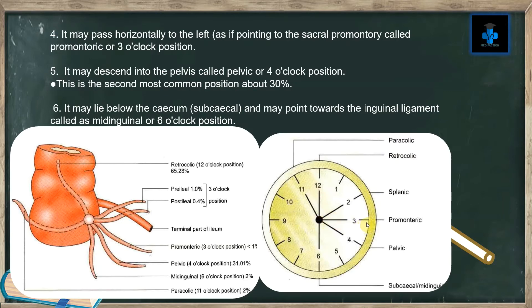It may pass horizontally to the left, as if pointing to the sacral promontory — called the promontoric or 3 o'clock position. It may descend into the pelvic region, otherwise called the 4 o'clock position. It may also lie below the cecum, that is sub-cecal, and may point towards the inguinal ligament — called the mid-inguinal or 6 o'clock position.